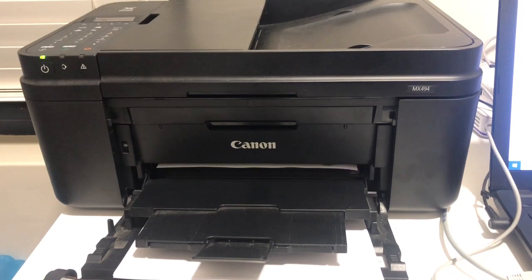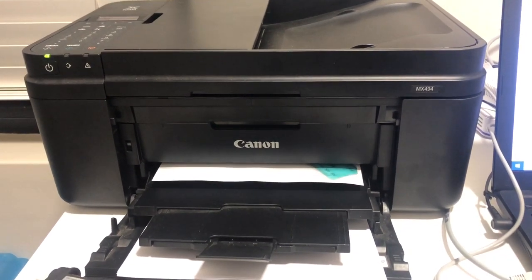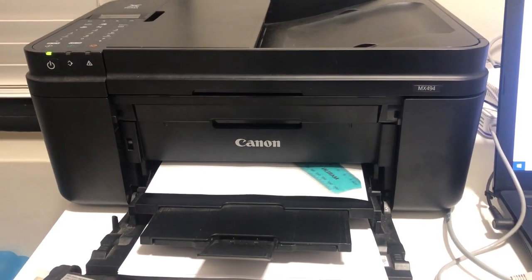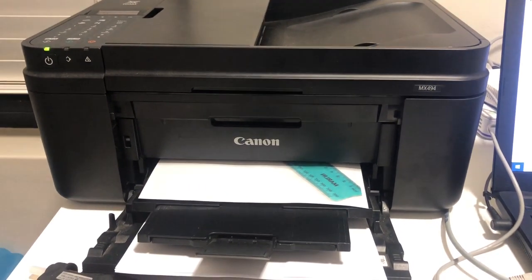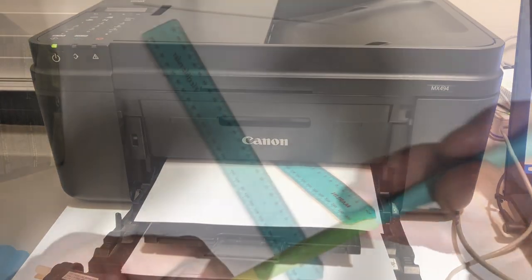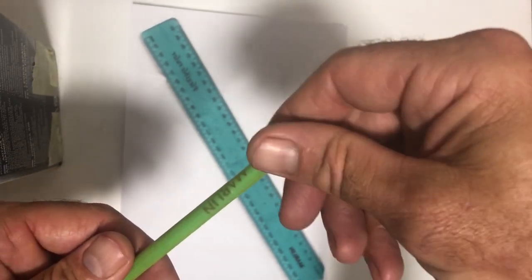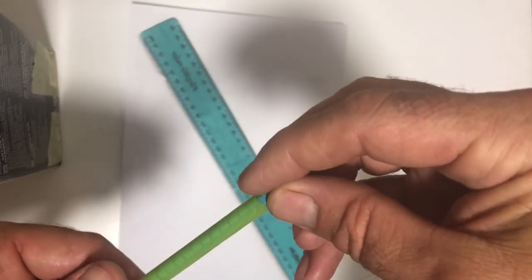Stick a ruler in your photocopier and print a copy off. Cut out the ruler and trim to the length of the straw and insert it into the straw.